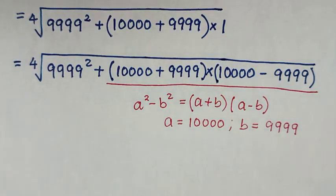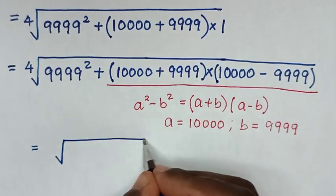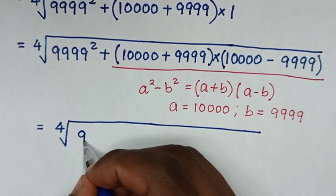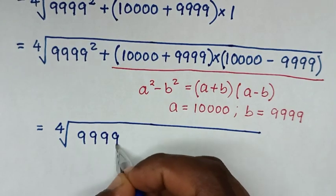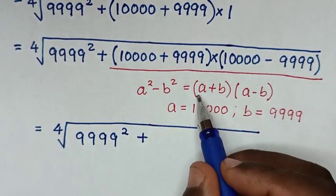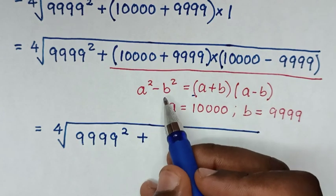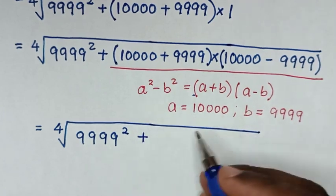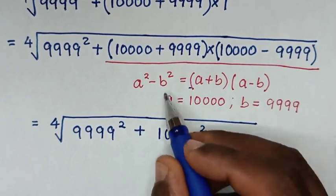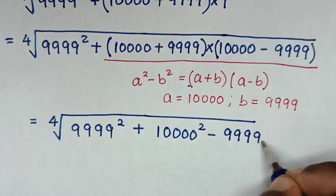The next step: it will be equal to the 4th root of 9,999 squared, plus this part changed into the form of a squared minus b squared. So a squared is 10,000 squared, then minus b squared which is 9,999 squared.